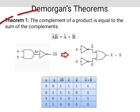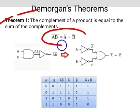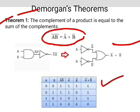Theorem 1 states that the complement of a product is equal to the sum of the complements. In equation form, A into B whole complement equals A complement plus B complement. This is illustrated by the gate equivalency and the truth table, as shown in the slide.